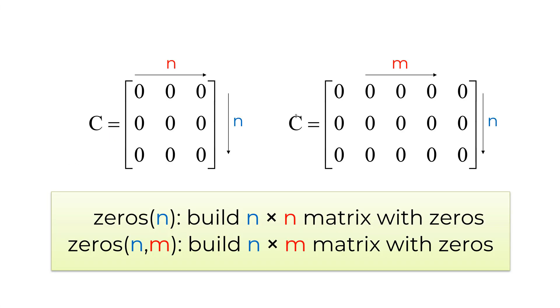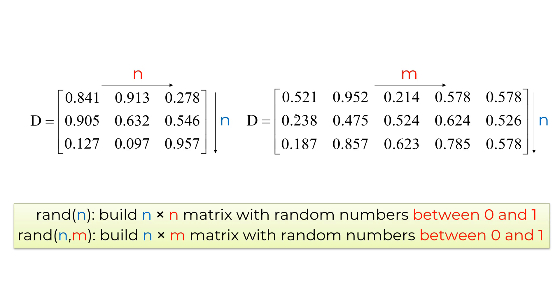Similarly, you can create matrix C with all elements of 0s using zeros(N) or zeros(N, M). For example, C equals zeros(3) create 3 by 3 matrix C with 0s, and C equals zeros(3, 5) create 3 by 5 matrix C with 0s.